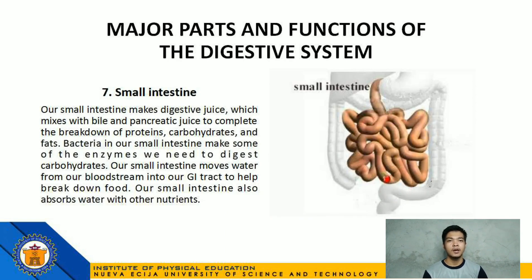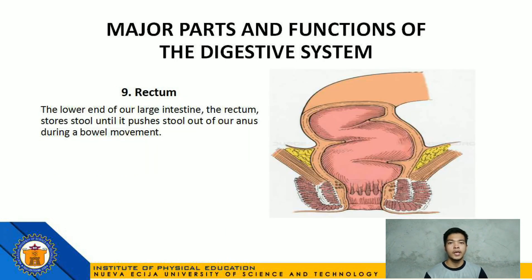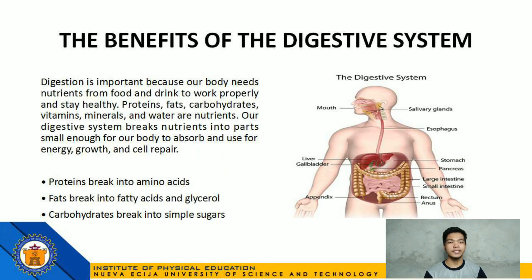Number 7: Small intestine — our small intestine makes digestive juice which mixes with bile and pancreatic juice to complete the breakdown of proteins, carbohydrates, and fats. Bacteria in our small intestine make some of the enzymes we need to digest carbohydrates. Our small intestine moves water from our bloodstream into our GI tract to help break down food, and also absorbs water with other nutrients. Number 8: Large intestine — more water moves from our GI tract into our bloodstream. Bacteria in our large intestine help break down remaining nutrients and make vitamin K. Waste products of digestion, including parts of food that are still too large, become stool. Number 9: Rectum — the lower end of our large intestine; the rectum stores stool until it pushes stool out of our anus during a bowel movement.